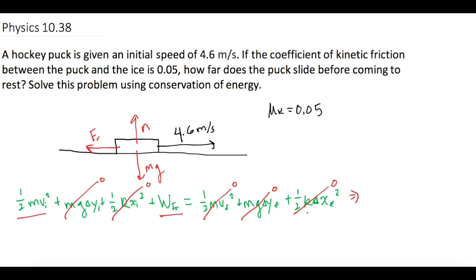That leaves us with: ½mv_initial² + W_friction = 0. Moving friction over: ½mv_initial² = W_friction. The kinetic energy we start with must equal the work done by friction, since friction is the only thing stopping the puck.